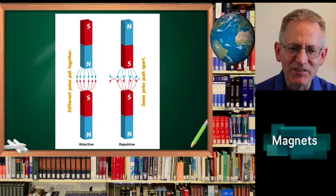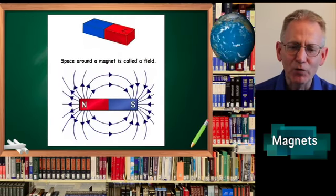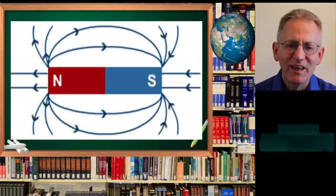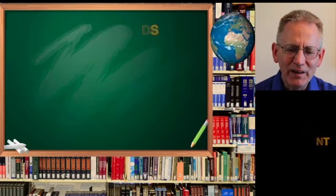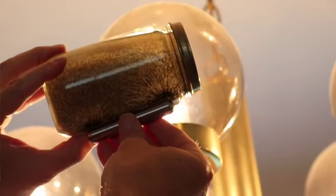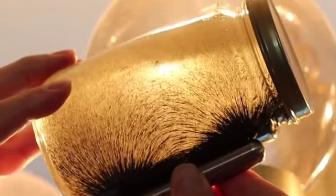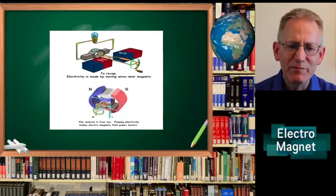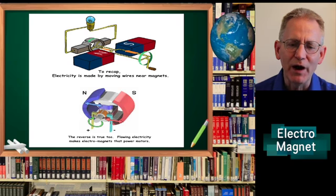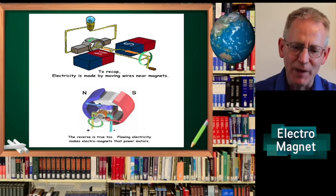Magnets have two sides called poles: north and south. Different poles pull together. Same poles push apart. The space around a magnet is called a field. Let's do a hands-on experiment. Oil, pour in a bit of iron filings, little bits of iron. Bring it near a magnet. In this case, it's a cow magnet. And you can see the magnetic field in the filings. Electricity and magnets are related. To recap, electricity is made by moving wires near magnets. The reverse is true too. Flowing electricity makes electromagnets that power motors.